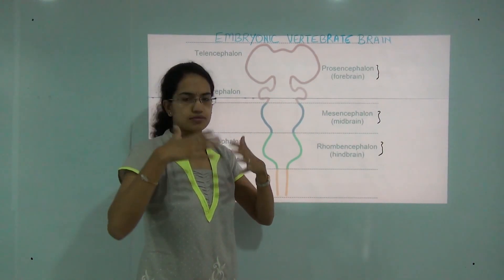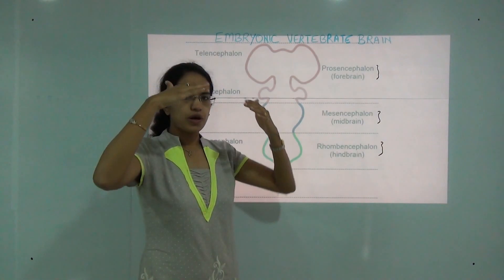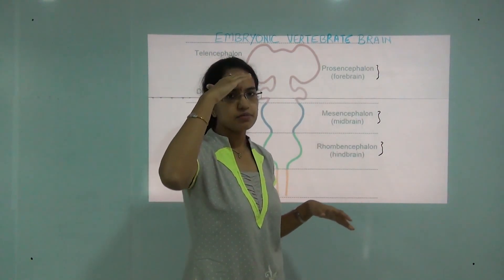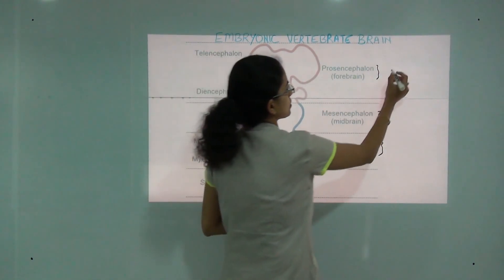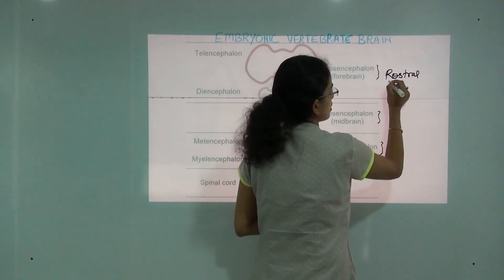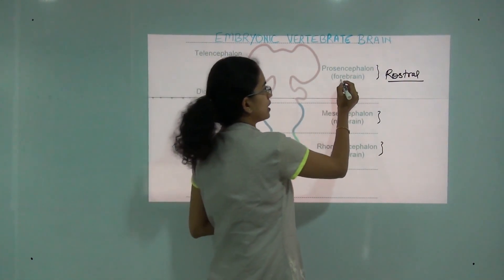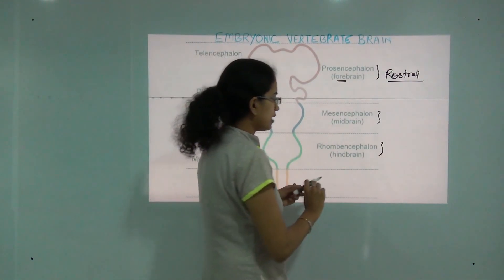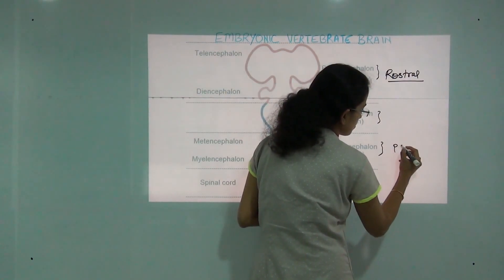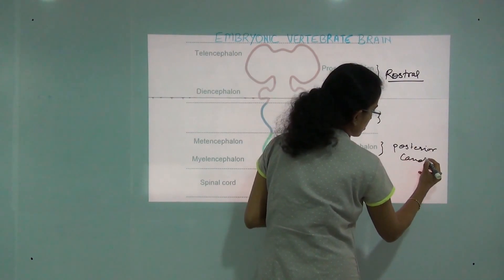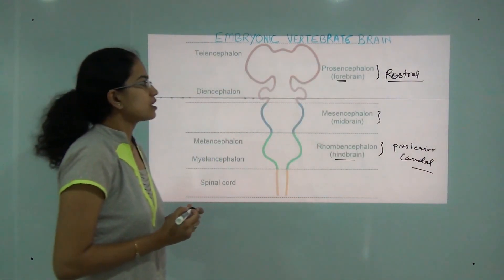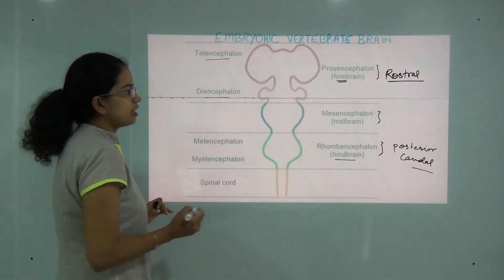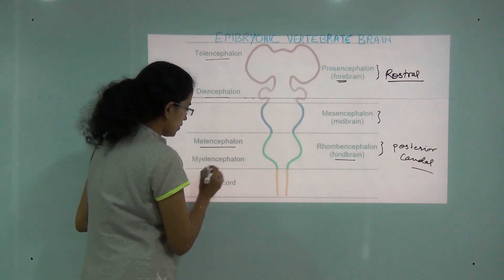In the developed adult human brain, you have the front or anterior portion which is the forebrain, also known as the rostral part. Towards the end or posterior part, you have the rhombencephalon, or hindbrain. Prosencephalon is divided into telencephalon and diencephalon, and rhombencephalon is divided into metencephalon and myelencephalon.